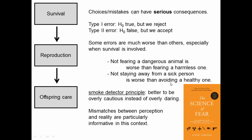Given that some consequences are worse than others, the fearful and avoiding choices are better — even though they are mistakes — than the more brave or accepting choices. This leads to the smoke detector principle: it is better to be overly cautious instead of overly daring. Smoke detectors in apartments are calibrated to go off at the slightest amount of smoke, because you'd much rather have ten false alarms but be guaranteed it goes off in an actual fire than have no false alarms but a slower response when a fire starts.